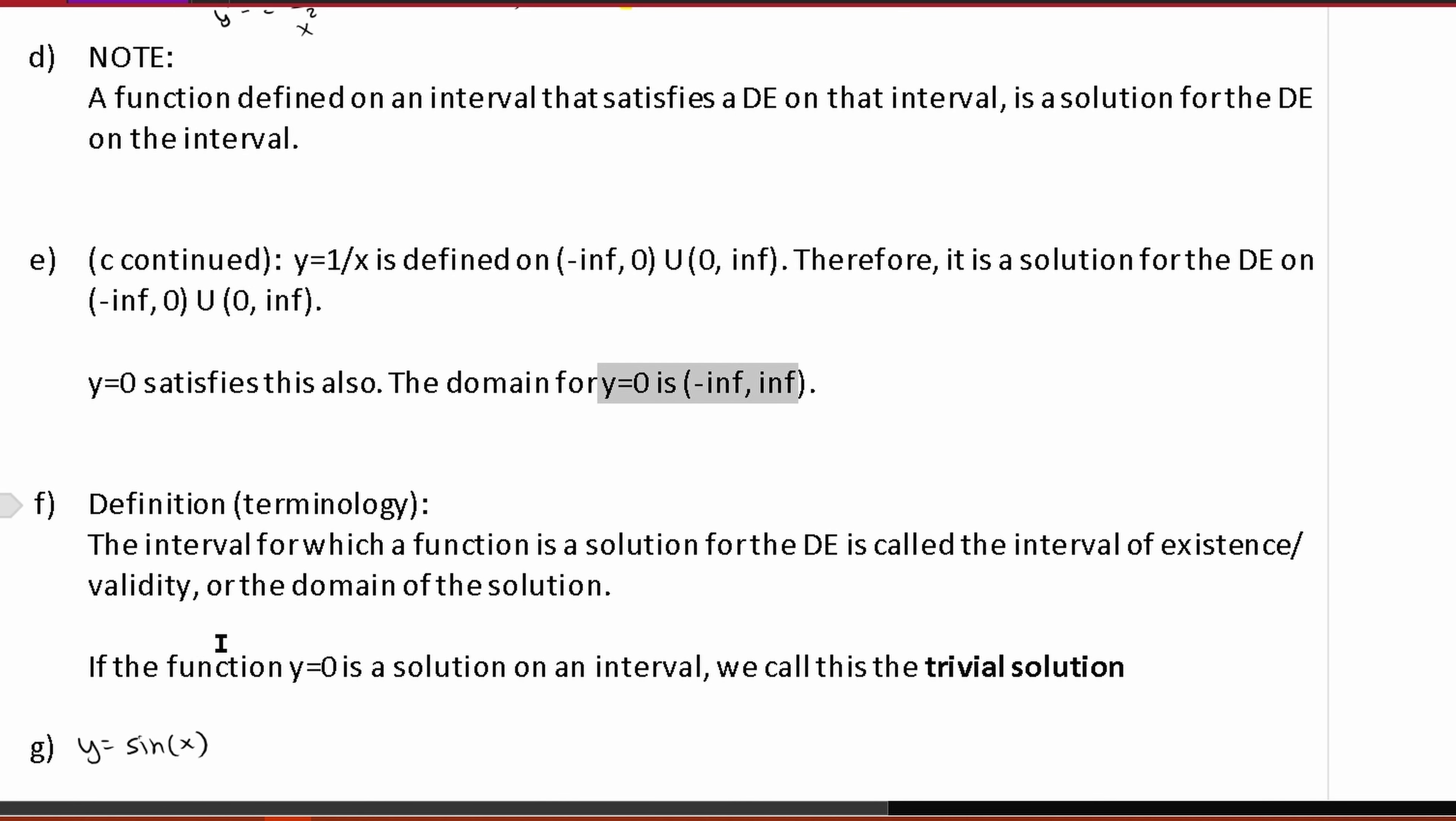Let's go over a little bit of terminology here. So the interval for which a function is a solution for the DE is called the interval of existence, validity, or the domain of the solution. So that would be this right here. It would be the interval of existence, or interval of validity, or it would be the domain of our solution.